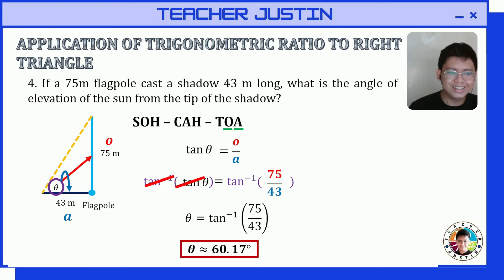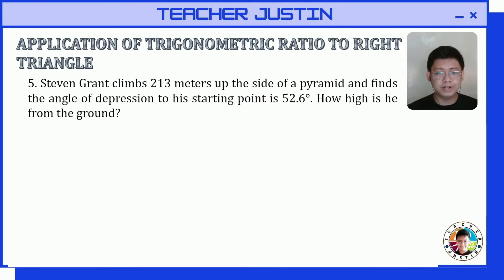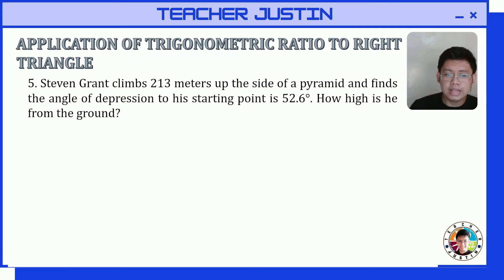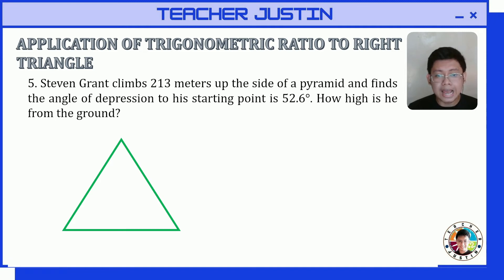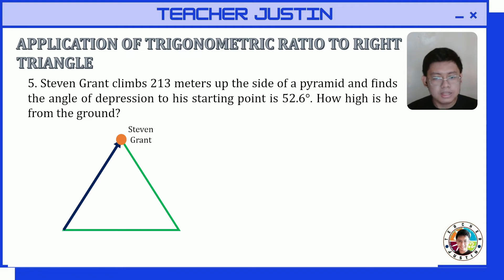Next example: Stephen Grant climbs 213 meters up the side of a pyramid and finds the angle of depression to his starting point is 52.6 degrees. The question is: how high is he from the ground? Let's illustrate — here is the pyramid, and Stephen climbs 213 meters up its side.